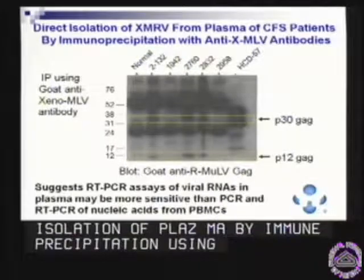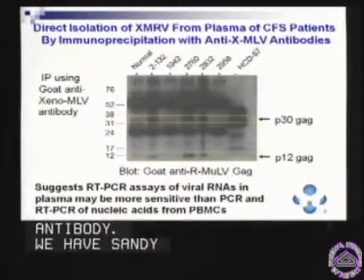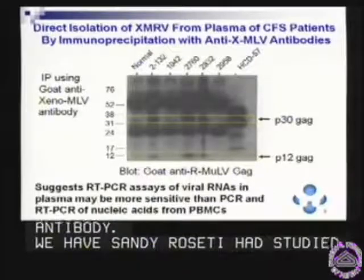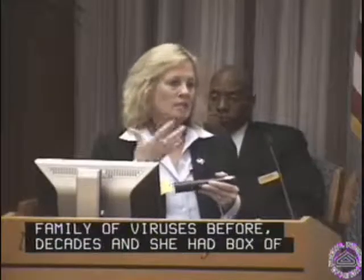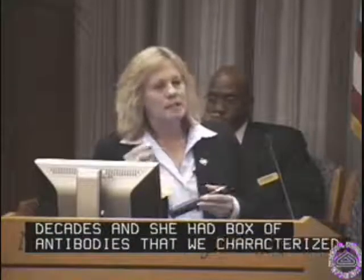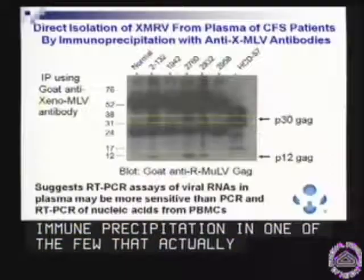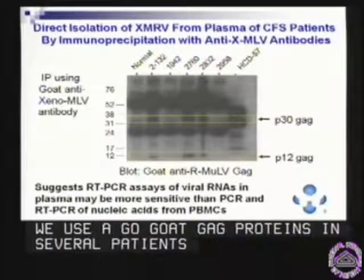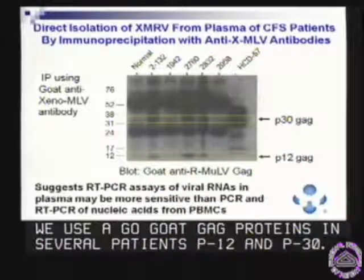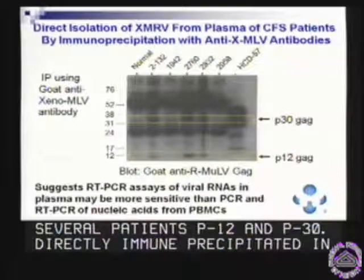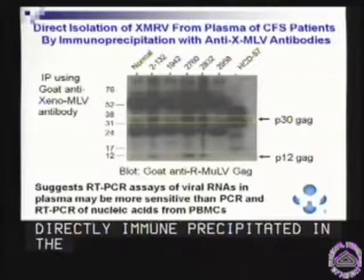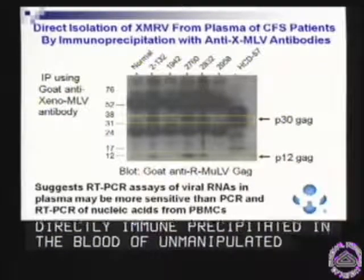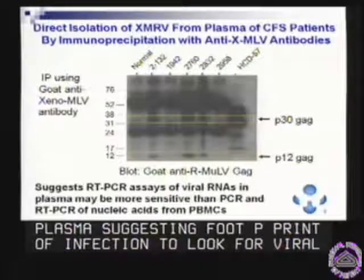Sandy Resetti in Calais had studied these family viruses for decades, and she had a box of antibodies that we characterized against all of our cells. This antibody was particularly good at immune precipitation, and one of the few that actually could. We used a goat gag monoclonal after we blotted it to show gag proteins — both P12 and P30 — could be directly immune precipitated in the blood of unmanipulated plasma, suggesting that it's a footprint of infection, looking for viral RNAs and actual proteins in the blood.